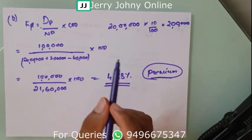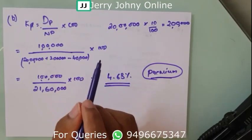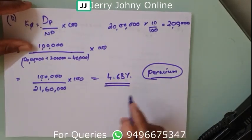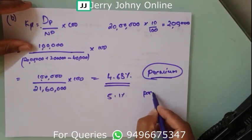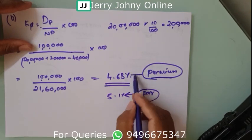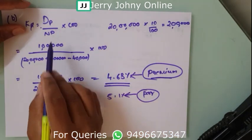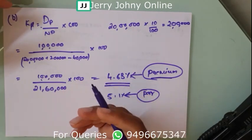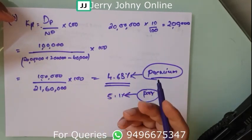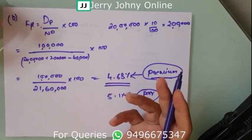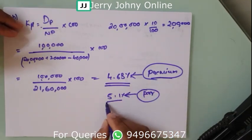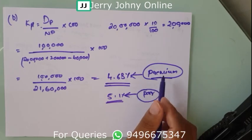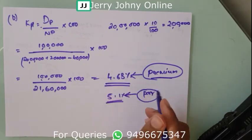The difference between the par and the premium sub-parts is that at par it is 5.1%, while at premium the cost comes down to 4.63%. Because the same dividend is spread over a higher amount of net proceeds received, the percentage cost reduces.